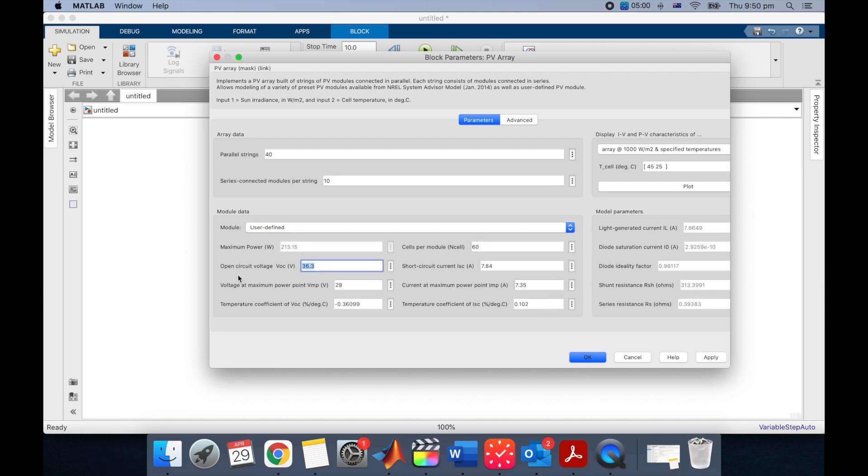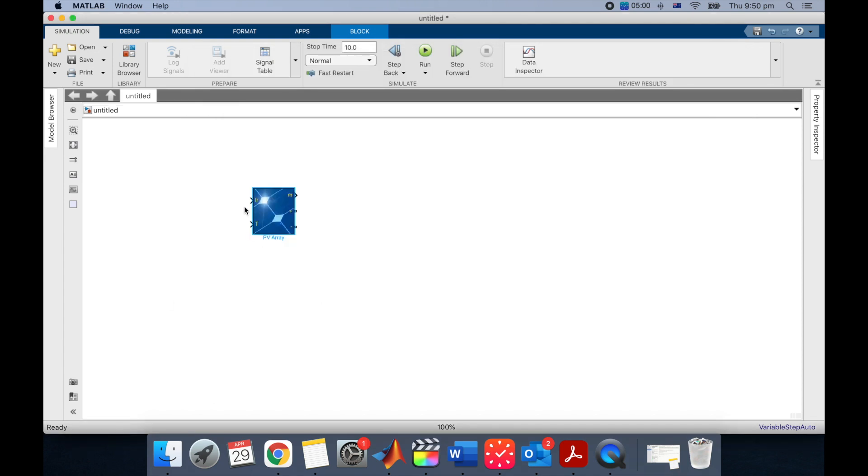And by choosing user-defined, you can change the open circuit voltage, short circuit current, VMPP and IMPP in here according to the value in your data sheet. And also the temperature coefficients according to your data sheet.